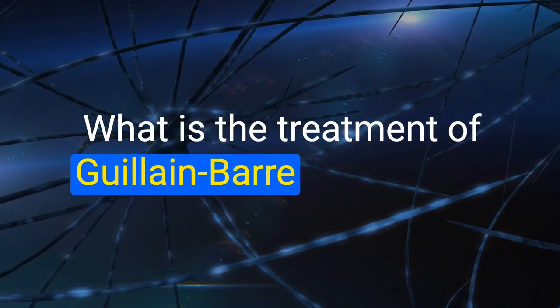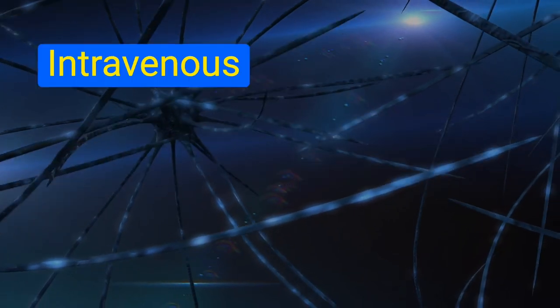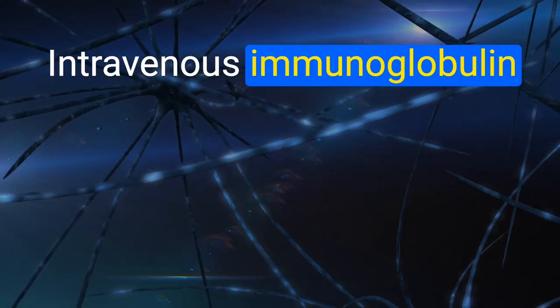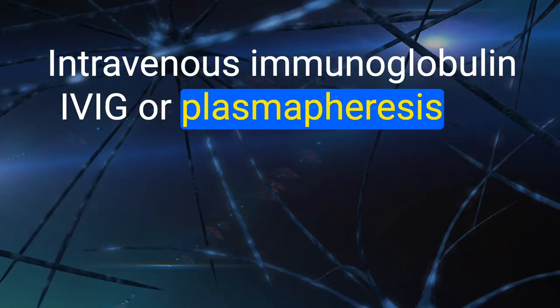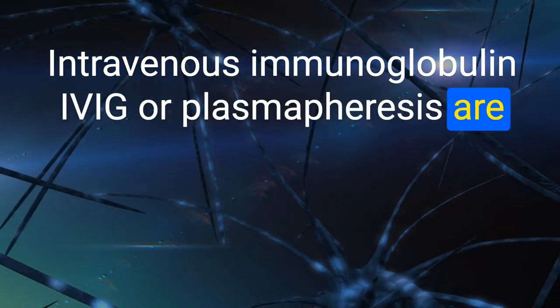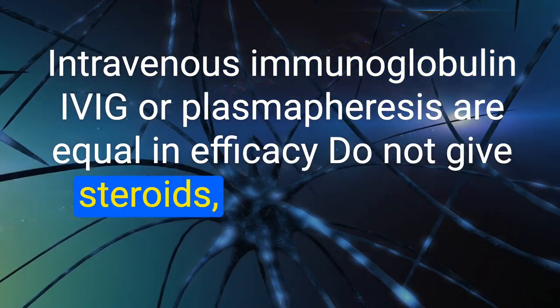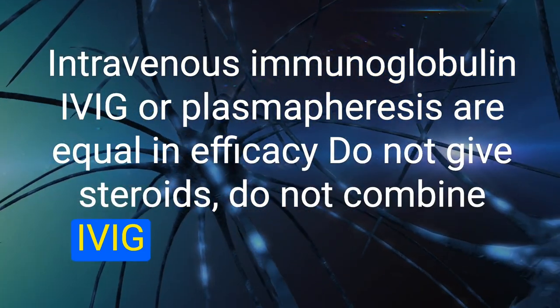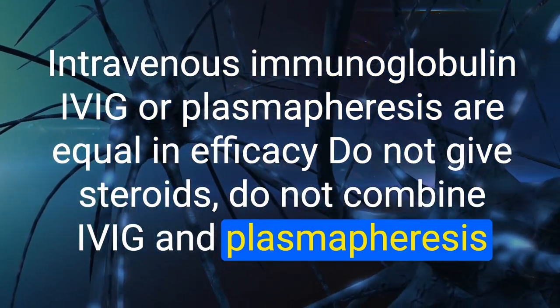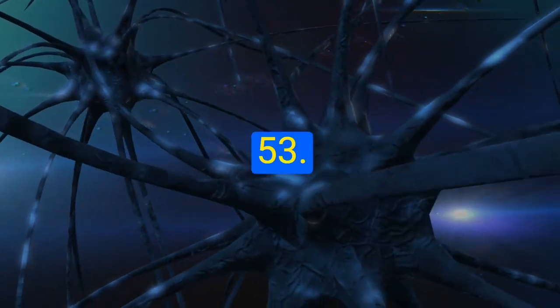52. What is the treatment of Guillain-Barré syndrome? Intravenous immunoglobulin (IVIG) or plasmapheresis — equal in efficacy. Do not give steroids. Do not combine IVIG and plasmapheresis.